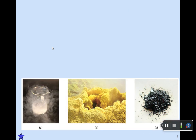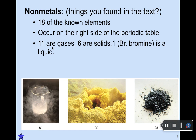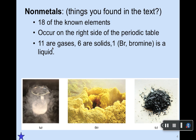The second set of elements shown here are another category. The one on the left is a liquid with gas all around it. The second is an interesting yellow substance. The third looks like little metal shavings — but in fact they're not metals, because all three are non-metals. They are 18 of the known elements. They occur on the right side of the periodic table. Eleven of them are gases, six are solids, and only one — bromine — is a liquid. They are poor conductors of heat and electricity, and unlike metals, their properties vary quite a bit. Metals are much more similar in their properties.